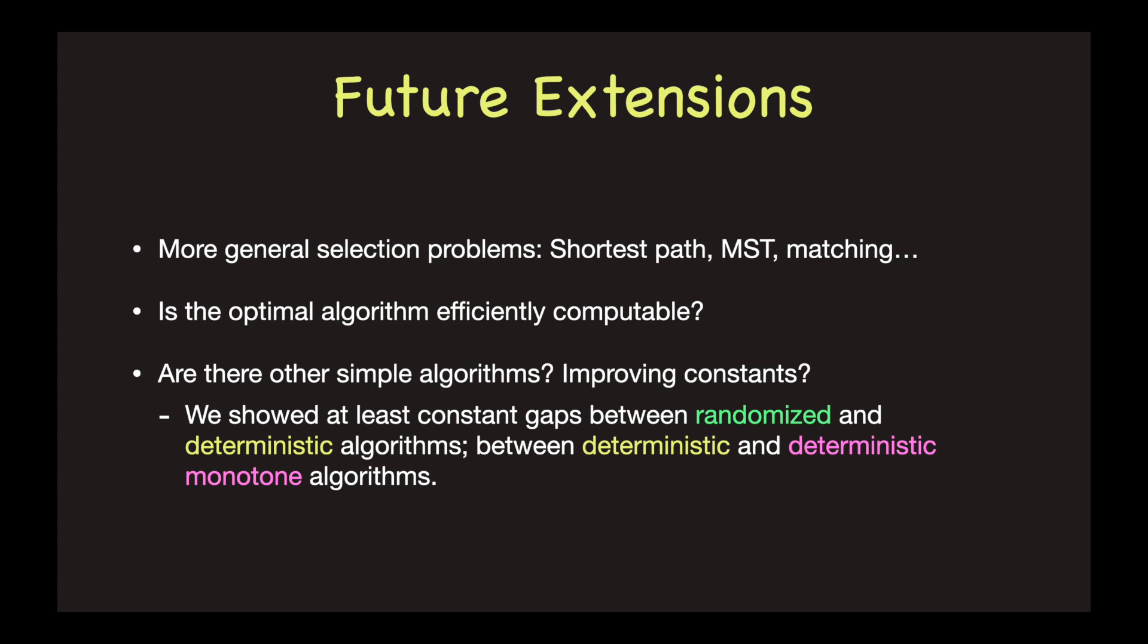We think there are many natural and promising future directions of our model. First, can we generalize our results to other selection problems, such as selecting a shortest path, a minimum spanning tree, or a maximum weighted bipartite matching? We think these are not only mathematically intriguing, but also practically useful, as our model for measurement errors can potentially be applied to many relevant situations.